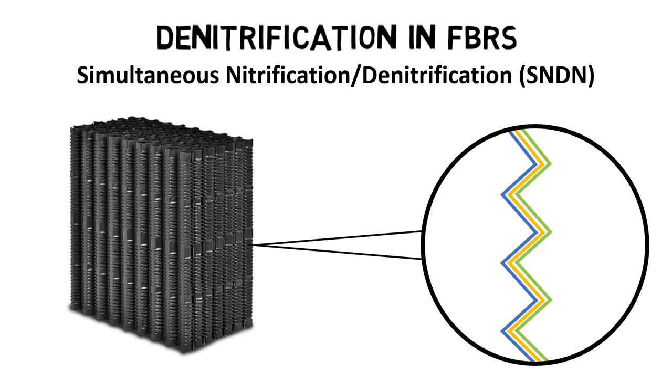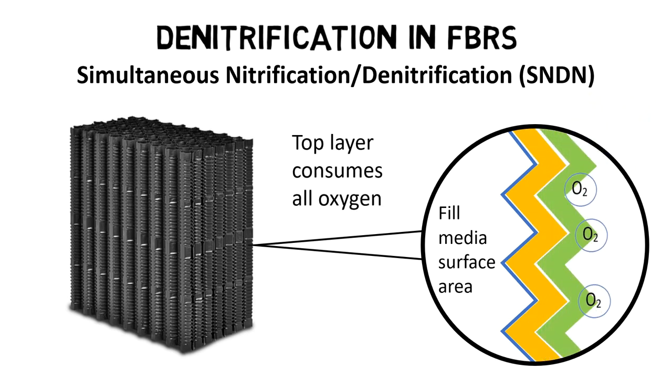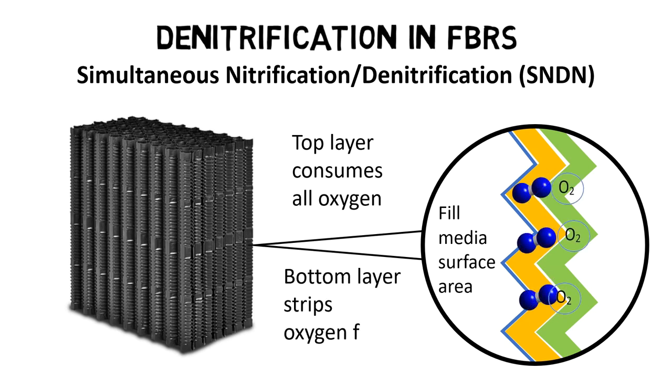Here microorganisms are attached to a film media surface and form a biofilm layer. While the top layers of microorganisms consume the available oxygen to oxidize ammonia, deeper layers are forced to strip oxygen from nitrate NO3- to produce nitrogen gas N2 within a fixed bed reactor.